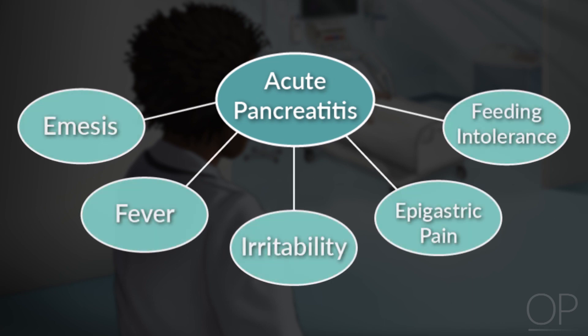Not all children will have typical epigastric pain with emesis. Some might just have emesis, or others might have solely a fever with irritability. The most challenging patients are those who are nonverbal and cannot convey pain. For this reason, acute pancreatitis should be on the differential for any child with abdominal pain, emesis, persistent irritability, or even feeding intolerance.